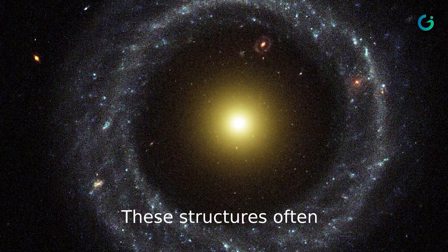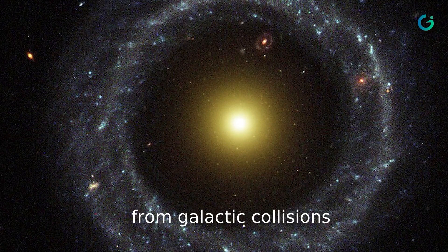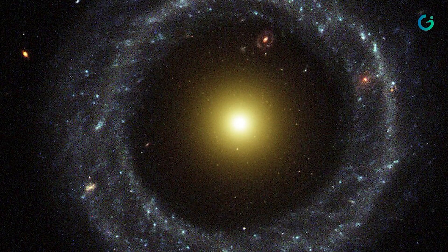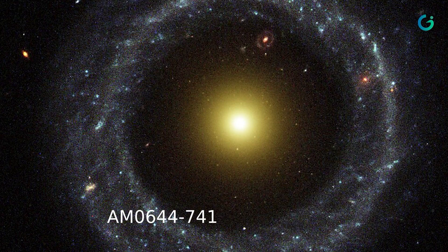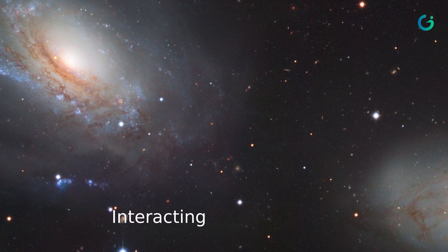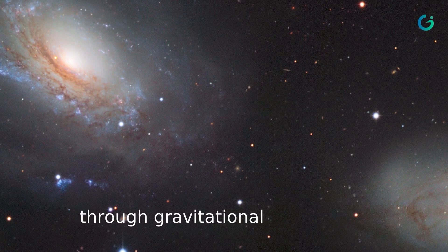Ring galaxies exhibit a ring-like structure surrounding a central core. These structures often result from galactic collisions or interactions. Examples include Hoag's Object and AM0644-741.